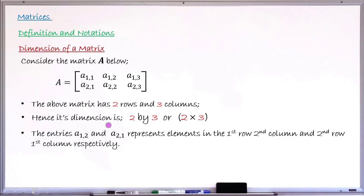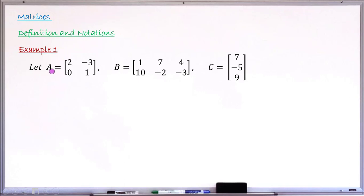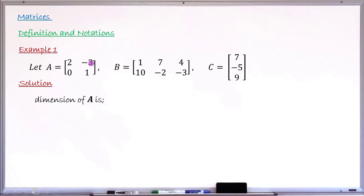Let's take Example 1. Matrix A has entries 2, minus 3 in the first row and 0, 1 in the second row. Matrix B has 1, 7, 4 in the first row and 10, minus 2, minus 3 in the second row. The question asks us to find the dimension of each matrix. For matrix A, we identify it has two rows and two columns, so the dimension of matrix A equals 2 × 2.